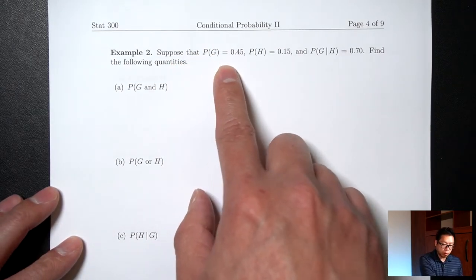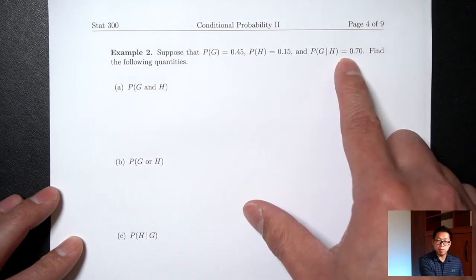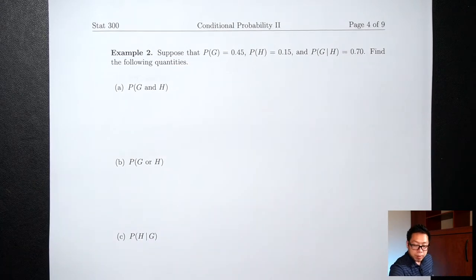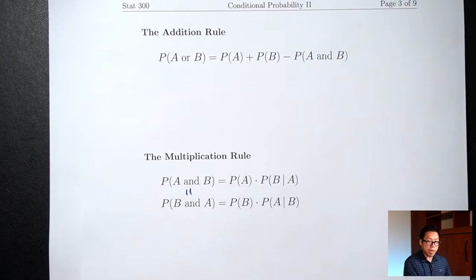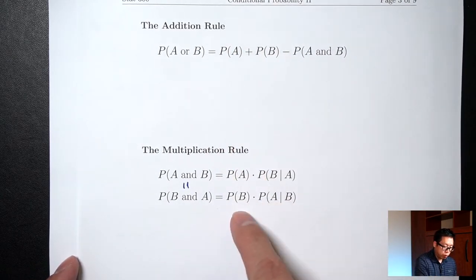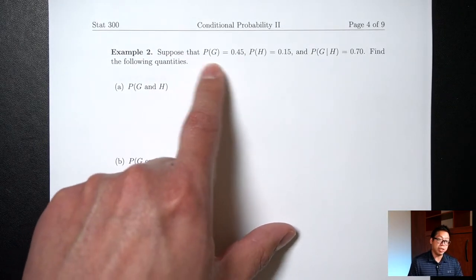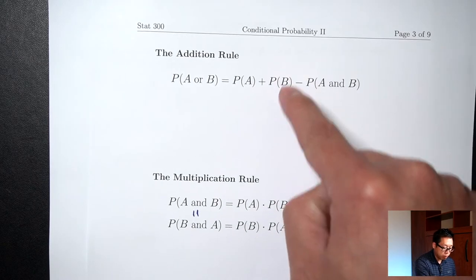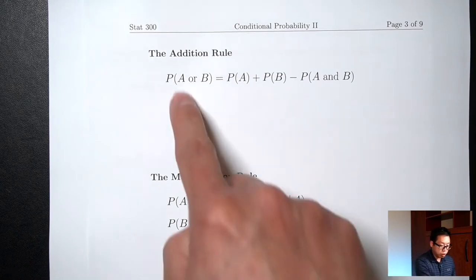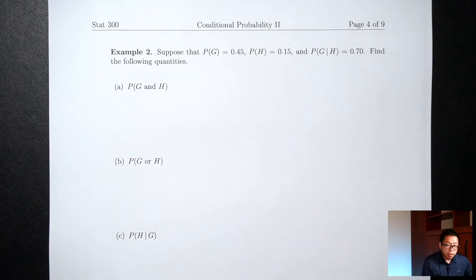Suppose probability of G is 0.45, probability of H is 0.15, and probability of G given H is 0.70 — find the following quantities. I'll need the first three formulas, but since the question uses G's and H's rather than A's and B's, I'm going to rewrite those formulas replacing A with G and B with H.